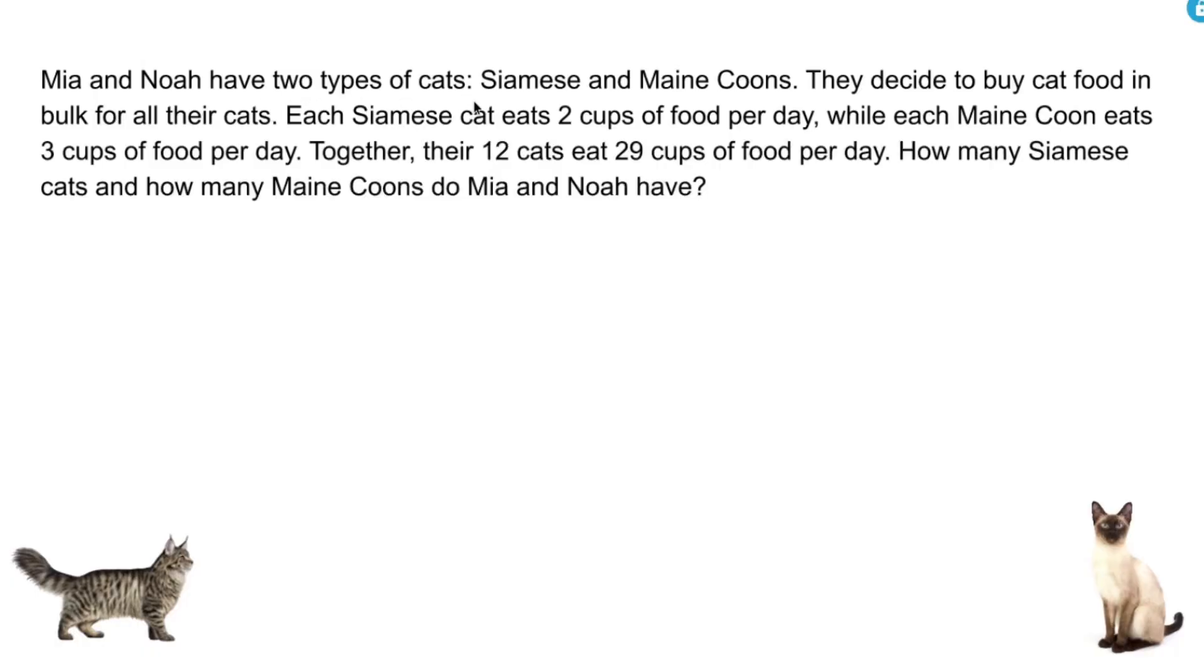Mia and Noah have two types of cats: Siamese and Maine Coons. They decide to buy cat food in bulk for all their cats. Each Siamese cat eats two cups of food per day, while each Maine Coon eats three cups of food per day. Together, their 12 cats eat 29 cups of food per day. How many Siamese cats and how many Maine Coons do Mia and Noah have?